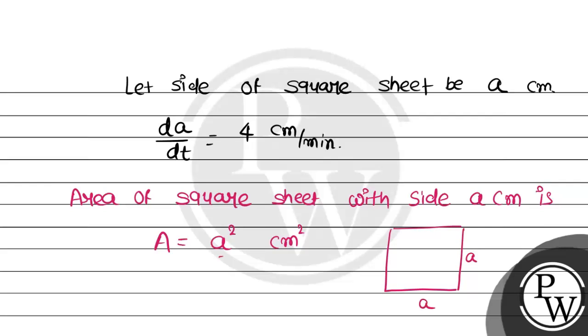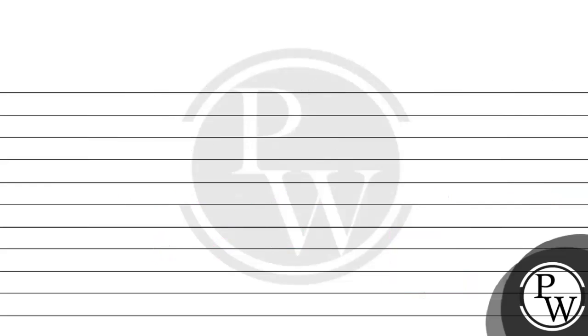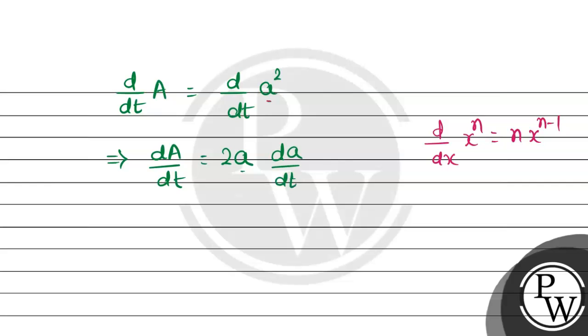We have to differentiate with respect to time. Take the derivative: d/dt(A) = d/dt(a²). That implies dA/dt. For a², we know the general rule that d/dx(x^n) = n·x^(n-1). So we get 2a, but a is changing with respect to time, so we multiply by da/dt.